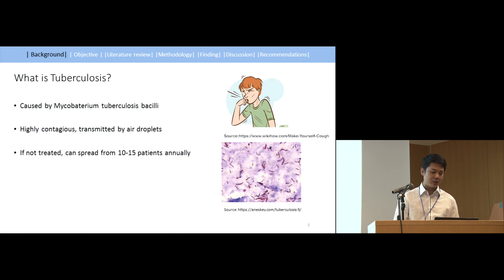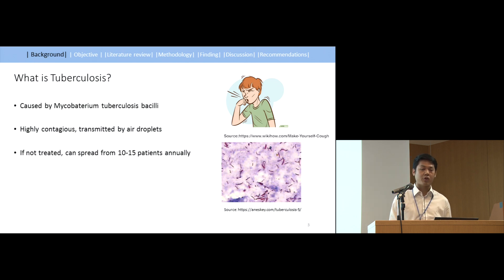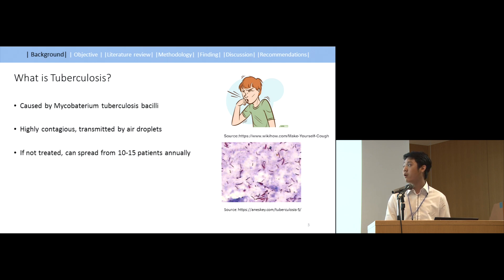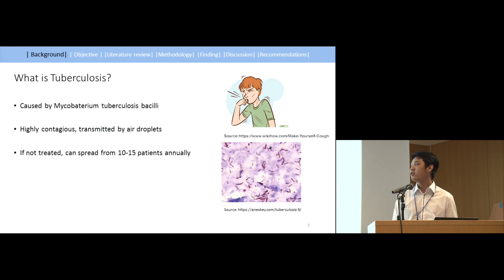Before going into the research, let me tell you what tuberculosis is. It is a disease caused by mycobacterium tuberculosis, and it's transmitted by air droplets — it can spread simply by coughing and sneezing. You will not know whether you have been infected, and when your immune system is weak, symptoms such as chronic cough and low-grade fever can appear. One TB patient, if not treated, could spread to another 10 to 15 patients annually.